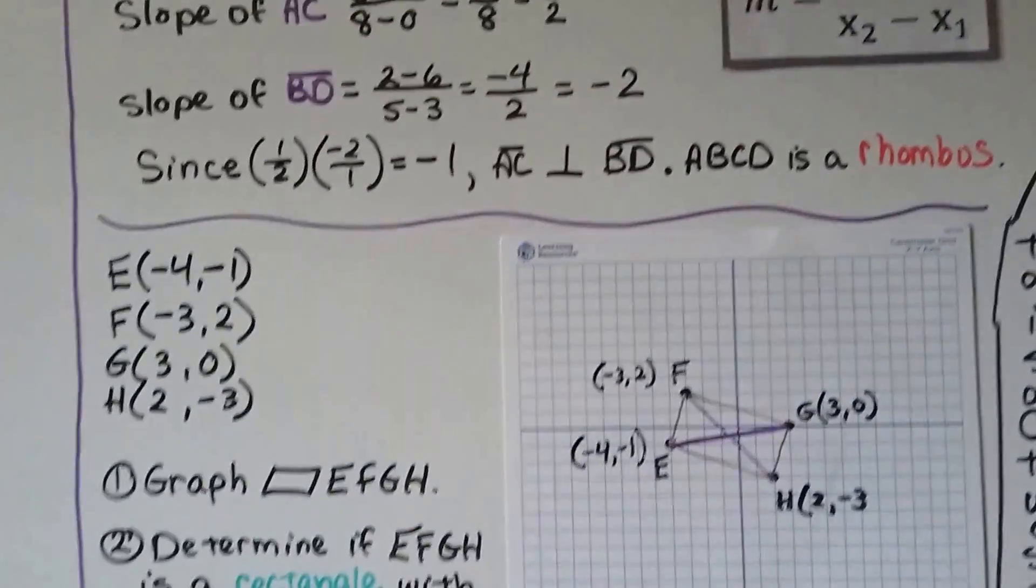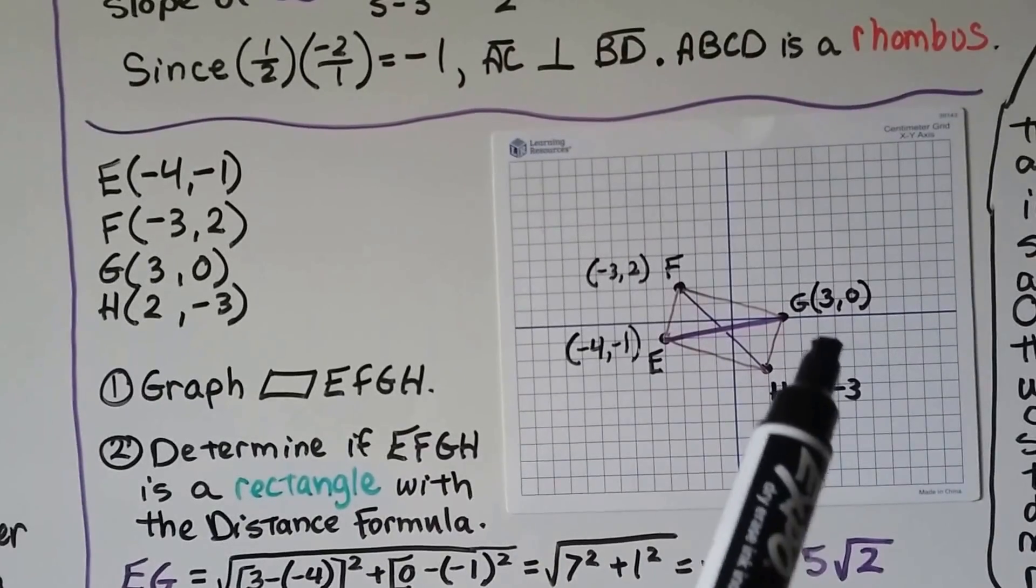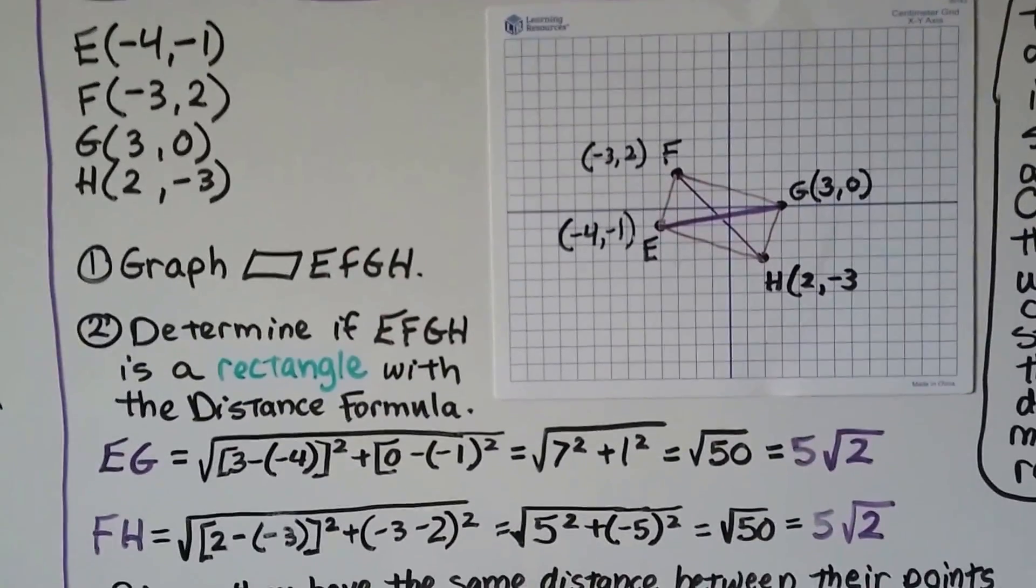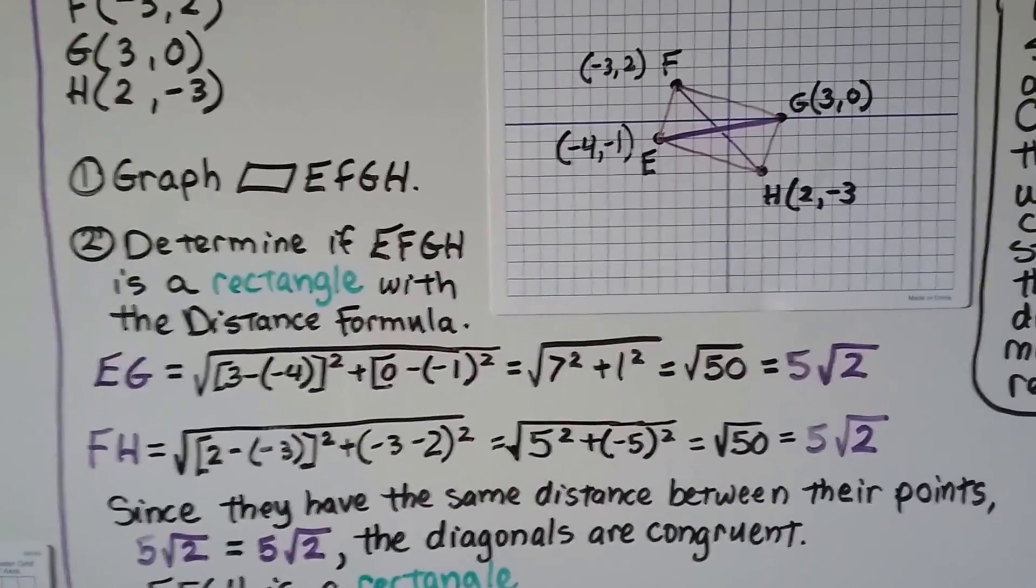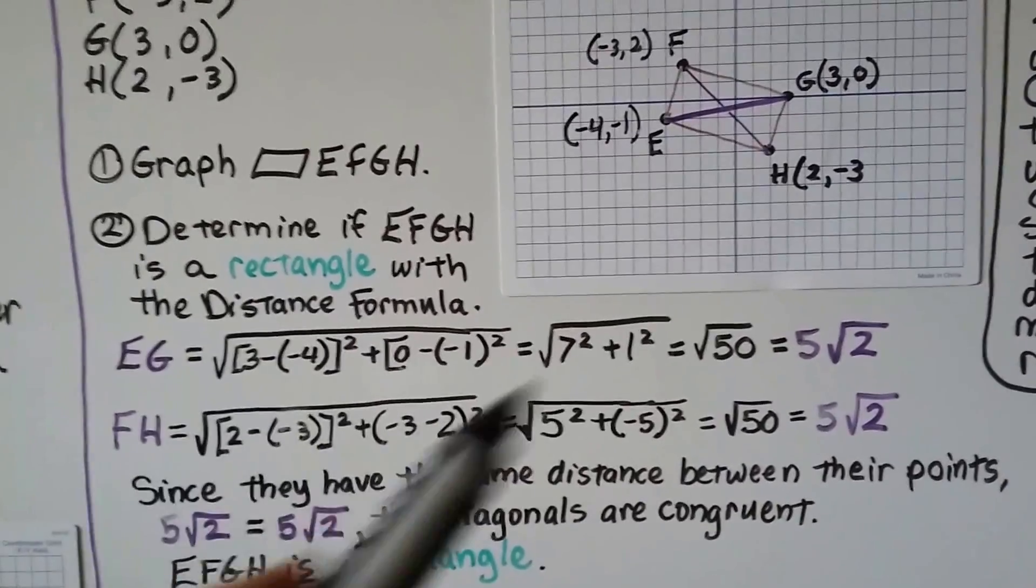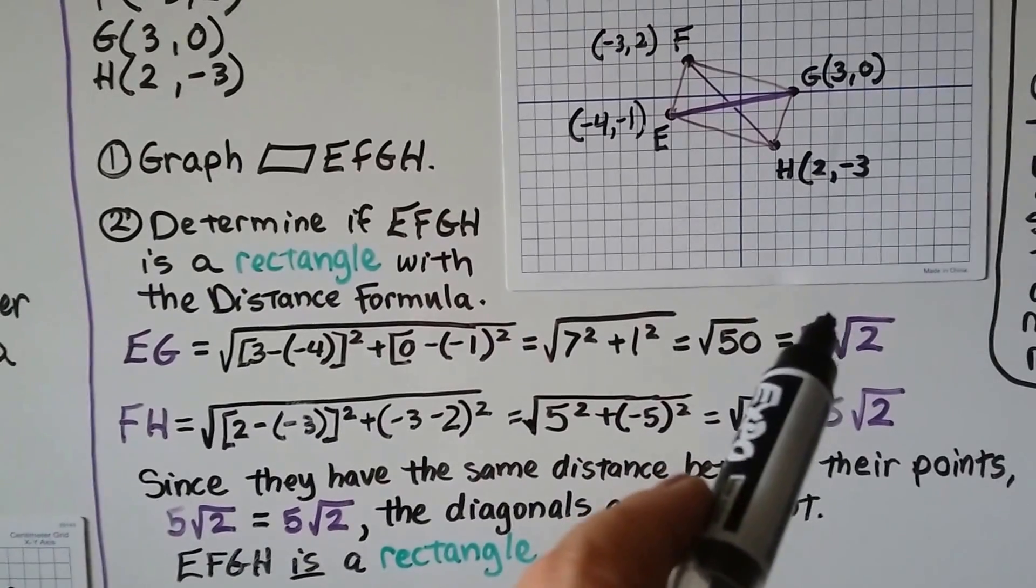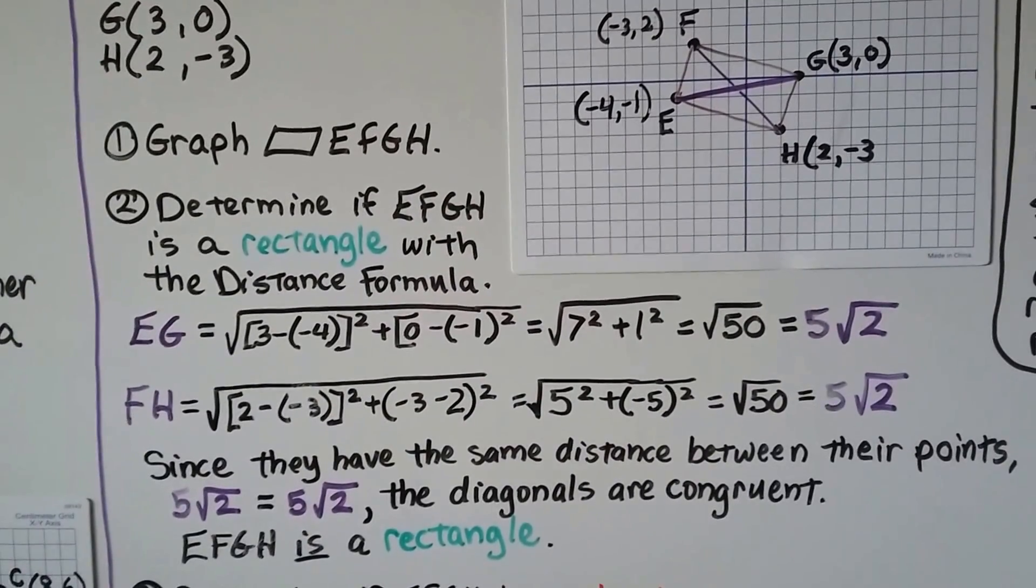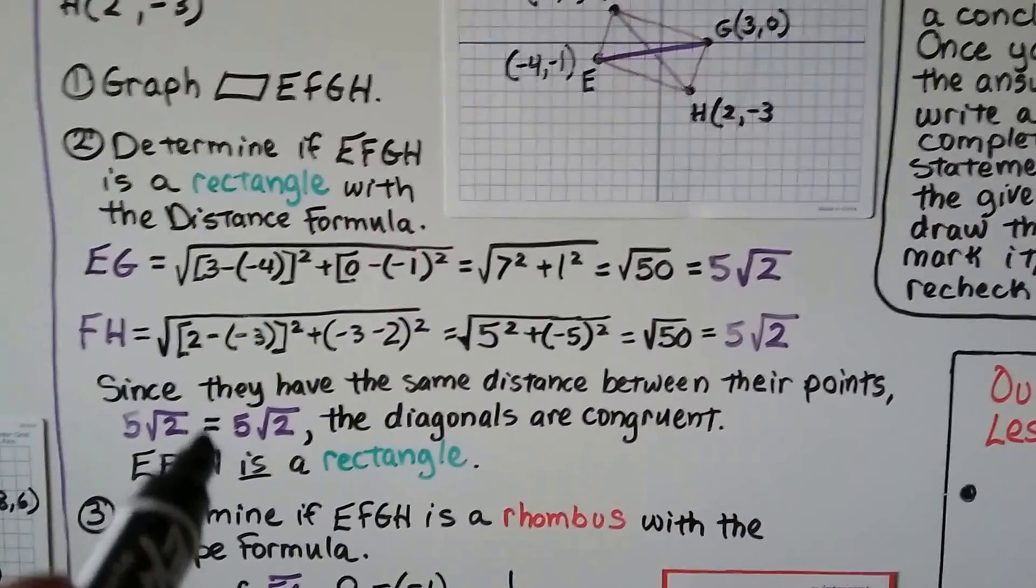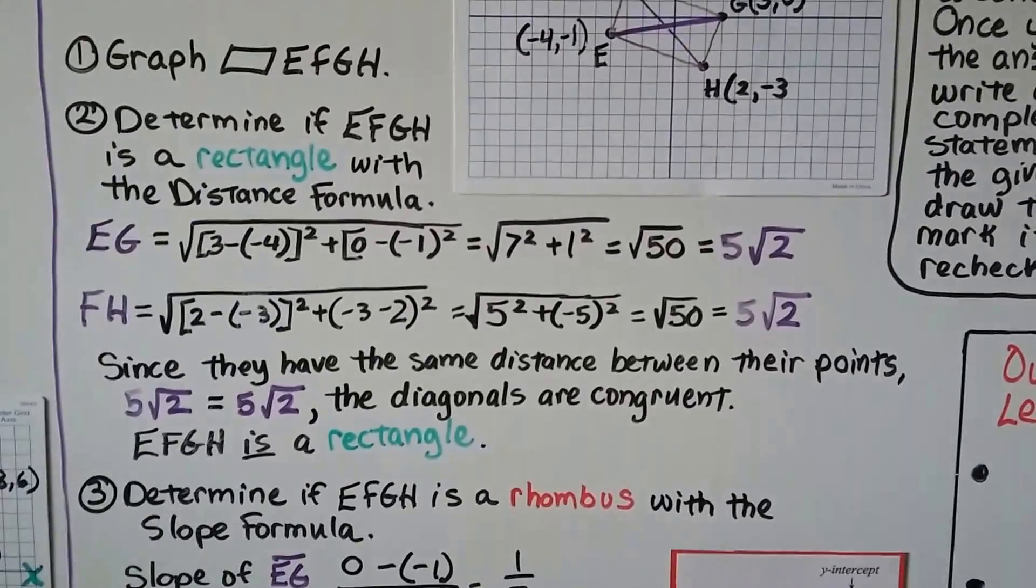Let's try another one. We've got these points. E is negative 4, negative 1. F is negative 3, 2. G is 3, 0. And H is 2, negative 3. We graph parallelogram EFGH. We determine if EFGH is a rectangle with the distance formula. And we do EG with the diagonals. And we do FH, that diagonal. And we look at their distances. EG is 5 square root of 2. FH is 5 square root of 2. Well, that means the diagonals are the same measure. We came up with the same distance. 5 square root of 2 equals 5 square root of 2. The diagonals are congruent. So EFGH is a rectangle.